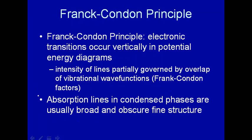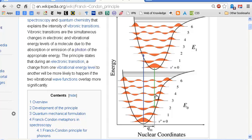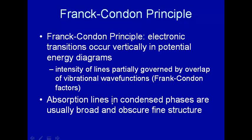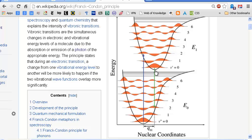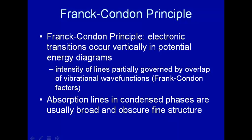You might be wondering why, if you put a compound in a solvent and look at the absorption spectrum, you don't see individual lines. The reason is that molecules in condensed phases — solution, liquid, or solid — have lots of interactions with the solvent or neighboring molecules, and these broaden the individual lines so you can't resolve them, you just see a broad envelope. Condensed phases broaden and obscure the fine structure. If you want to observe individual lines, you need to isolate the molecule from interactions with its environment by putting it in the gas phase.